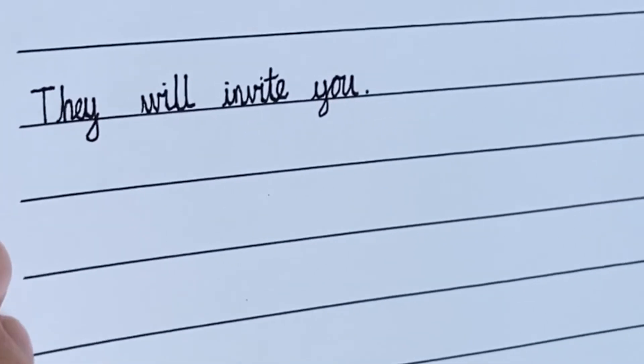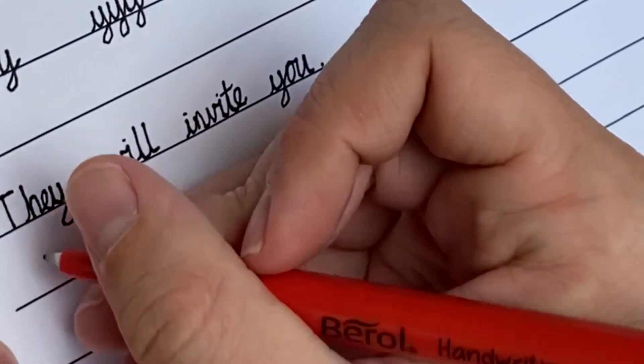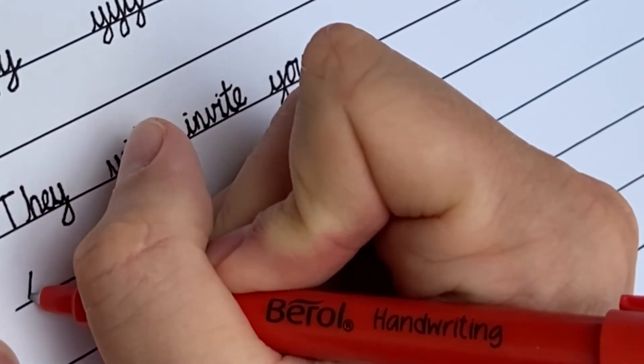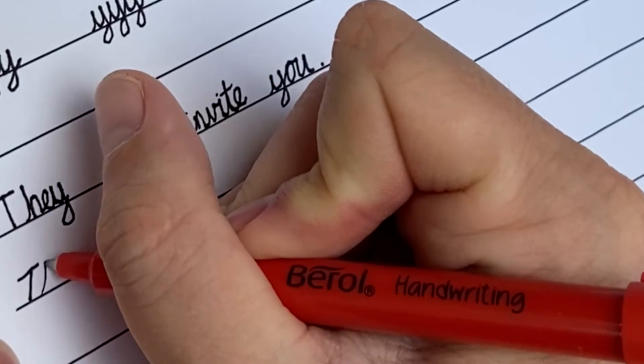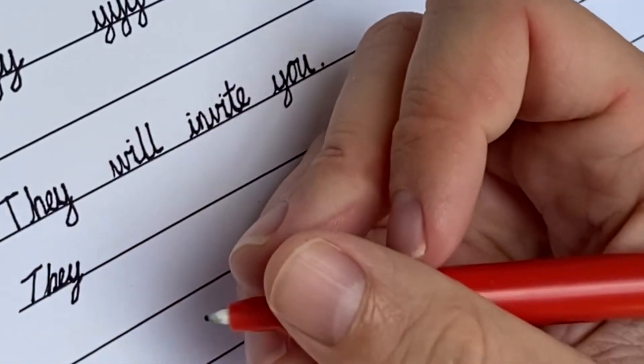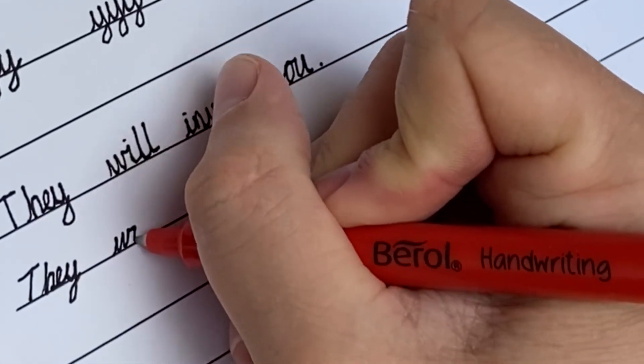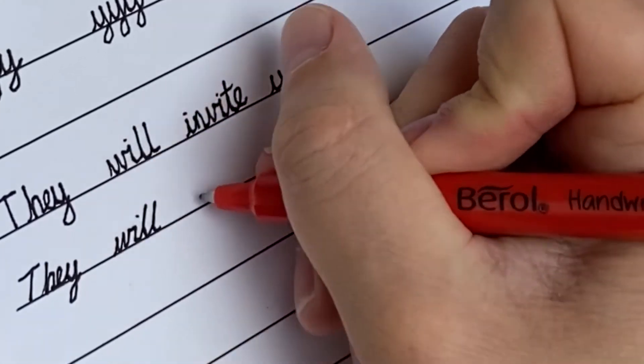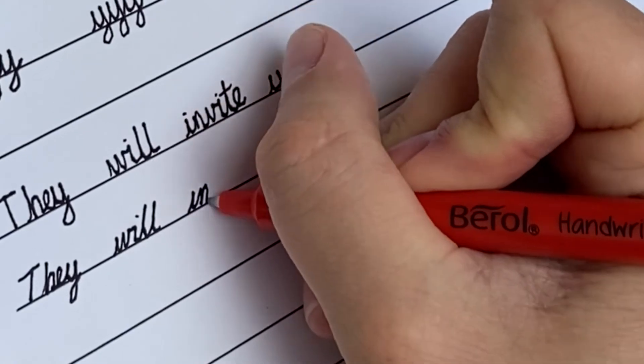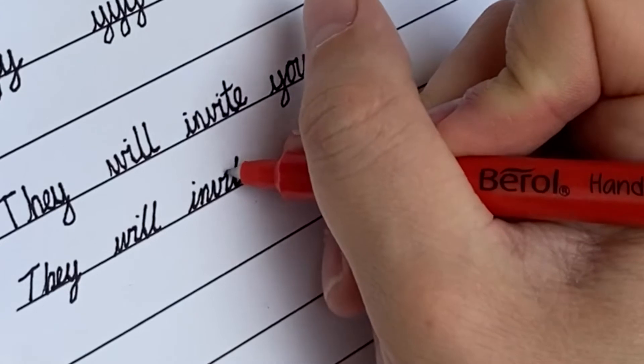And remember that washing line connection from the O to the U. So I'm going to have a go with a forward slant now. So I've changed the angle of the page just to help me get that lean on the letters. So they will invite you. Trying to get those letters leaning all the same amount.